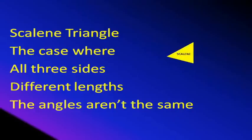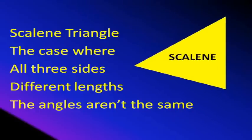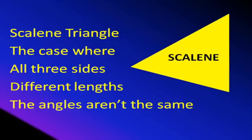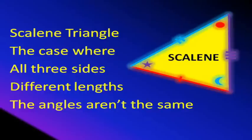Scalene triangle: the case where all three sides are different. The angles aren't the same.